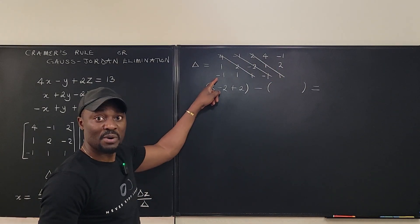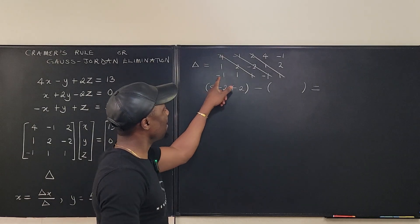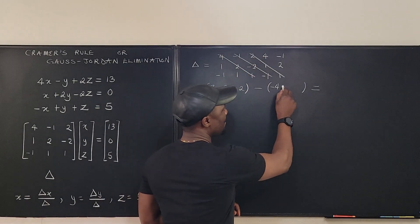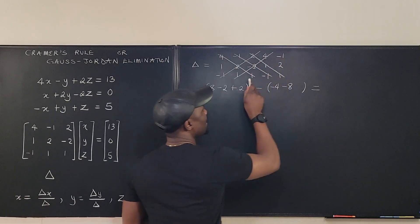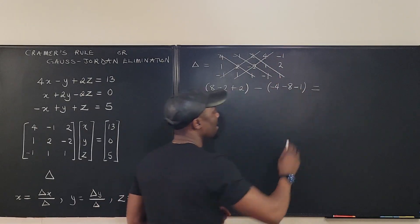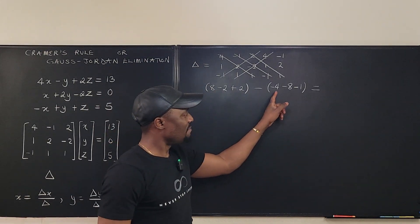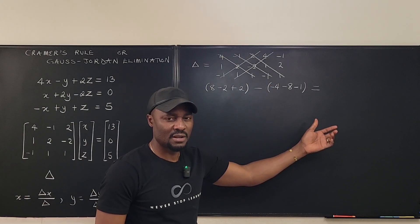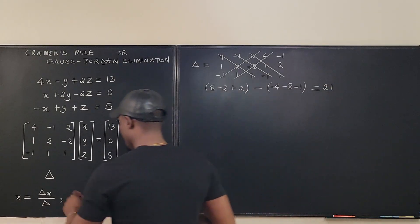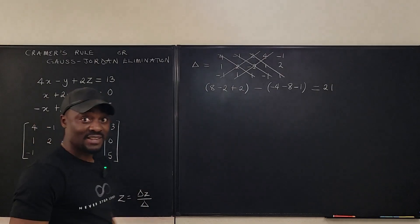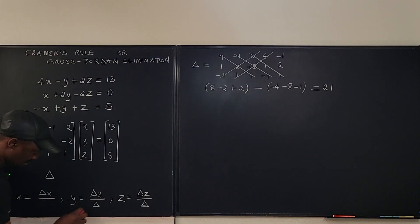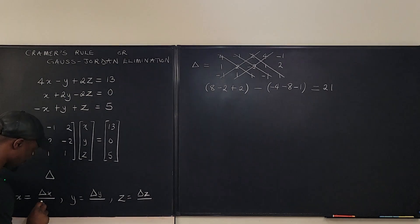Now repeat the same thing but start from the bottom and go up. Multiplying that way gives -4; going the next way gives -8; and 1 times 1 times -1 gives -1. So the positive side sums to 8, and the negative side sums to -13. It's 8 minus (-13) which is 8 plus 13 equals 21. So Delta equals 21.